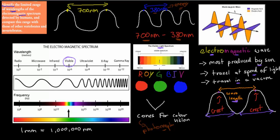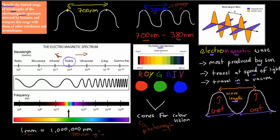That's basically what you should know about the electromagnetic spectrum — just what it is, what the visible light spectrum wavelengths are, roughly 700 to 380 nanometers. One millimeter equals one million nanometers. So a wavelength of 700 nanometers, like red, is a tiny wavelength — very small.